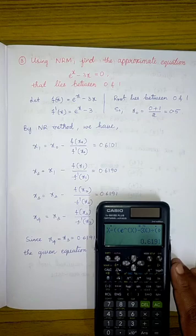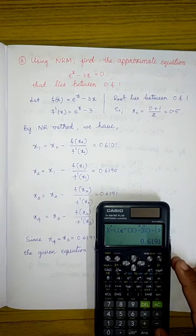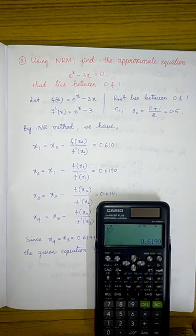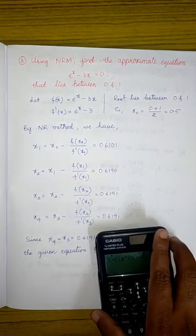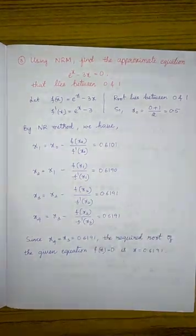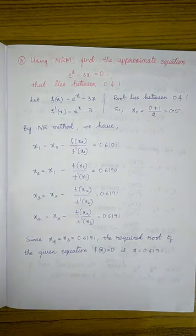And again, to calculate the next approximation, hit the equal button and substitute the value of X as 0.6191. So now we get the same thing, 0.6191. So I can say that since x4 and x3 are equal, the required root is 0.6191.